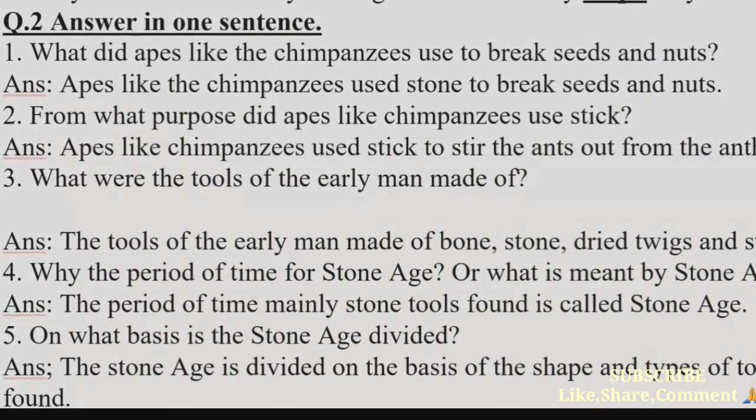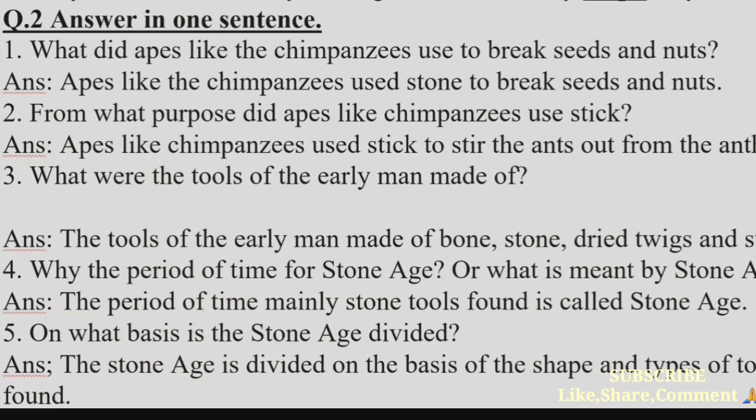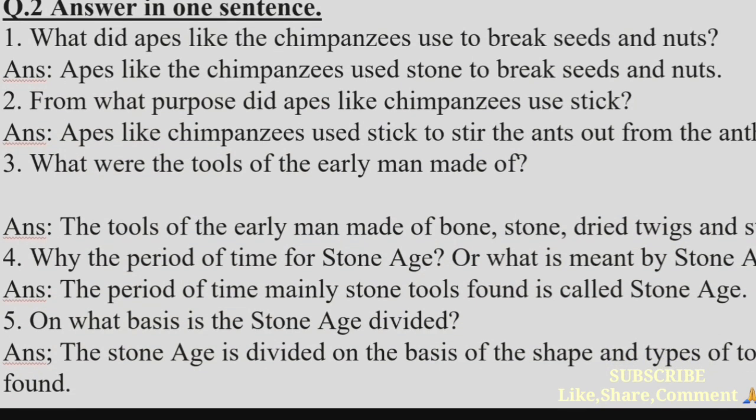Extra Question 2: Answer in one sentence. (1) What did apes like chimpanzees use to break seeds and nuts? Answer: Apes like chimpanzees used stones to break seeds and nuts. (2) For what purpose did apes use sticks? Answer: They used sticks to stir the ants out from the anthill. (3) What were the tools of early man made of? Answer: The tools of early man were made of bone, stone, twigs, and sticks.